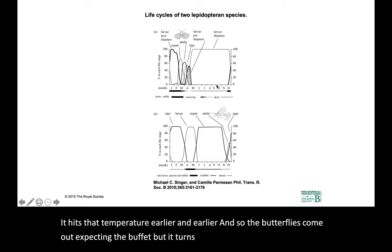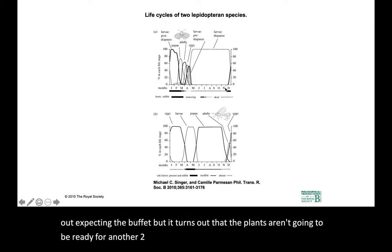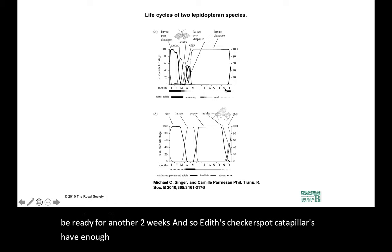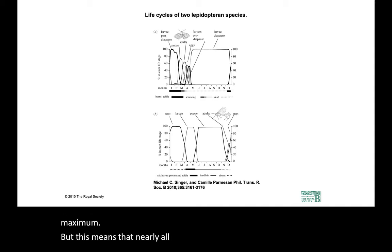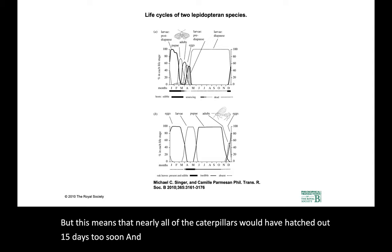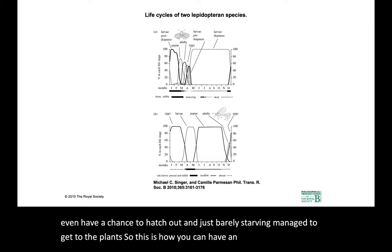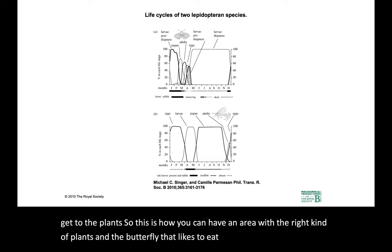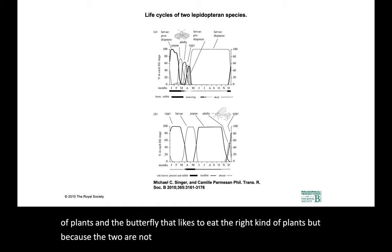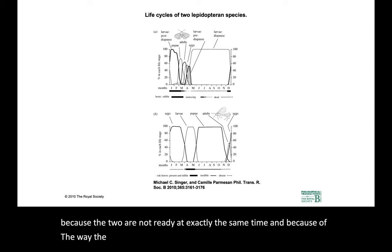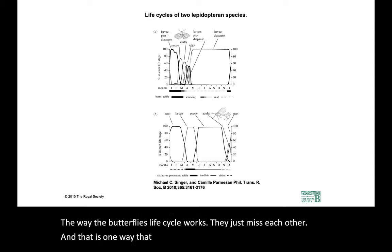Edith's checkerspot caterpillars have enough fat reserves that they can stay alive for about 10 days maximum. But nearly all of the caterpillars would have hatched out 15 days too soon — it's only just a couple of real latecomers that even have a chance to hatch out and just barely, starving, manage to get to the plants. So this is how you can have an area with the right kind of plants and the butterfly that likes to eat them, but because the two are not ready at exactly the same time and because of the way the butterfly's life cycle works, they just miss each other.